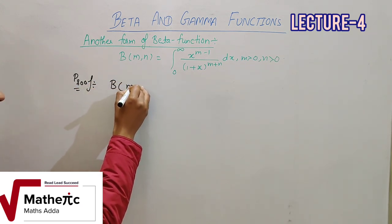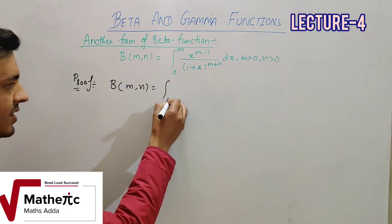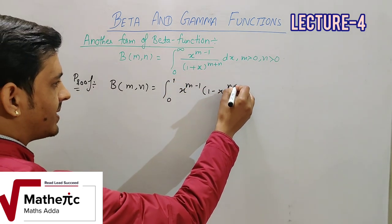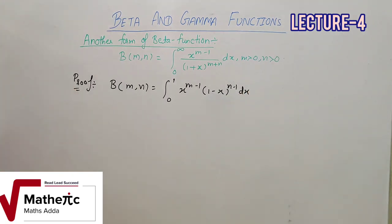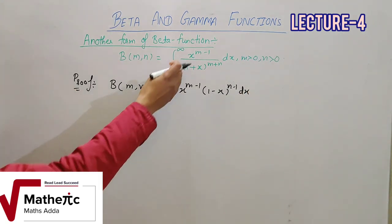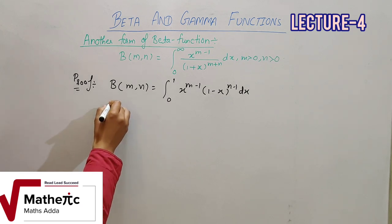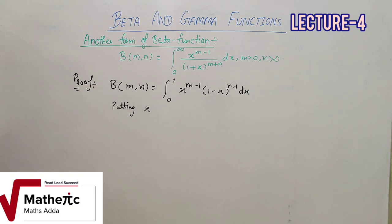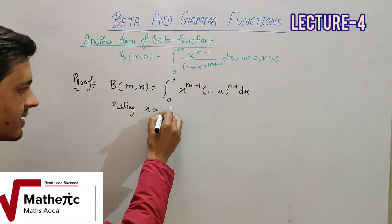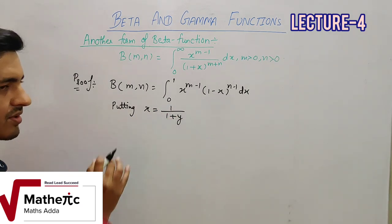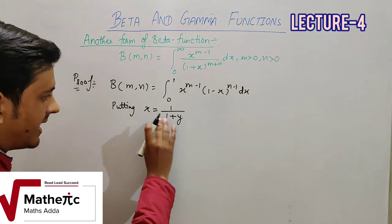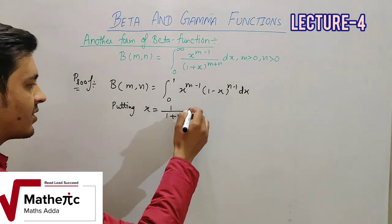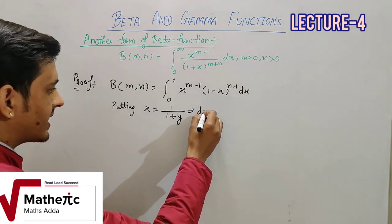Beta function का formula था: ∫₀¹ x^(m-1)(1-x)^(n-1) dx। इसी formula को आगे extend करेंगे और इसी से दूसरा formula proof करेंगे। इस integration में एक substitution याद रखना है: x = 1/(1+y)। यह substitution इसलिए important है क्योंकि इससे limit को 0 से infinity बना सकते हैं।